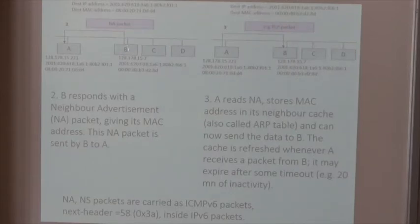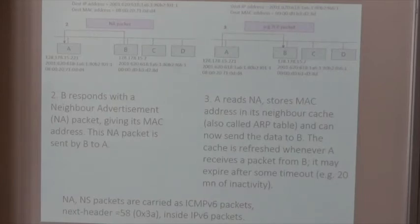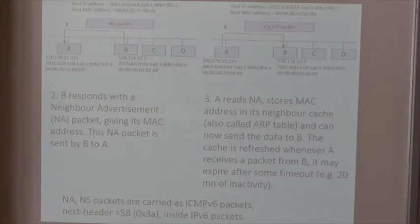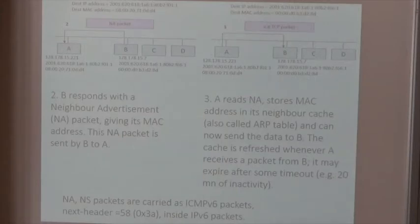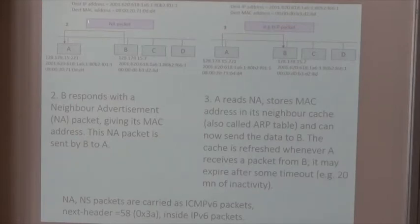A will keep the MAC address of B in its table so that whenever A has a packet to send to B, it will not need to redo the lookup. Like everything mentioned before, this is soft state — not hard-coded in A. The way to provide this is to have a timeout. So if A sends a packet to B once, after a number of minutes this cache will expire, and if A has to send a new packet, it will have to ask again. This makes sense especially if addresses are given by DHCP — after a few hours, the IP address may no longer map to the same machine, so the MAC address may have changed.